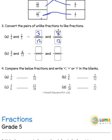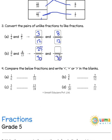Similarly for the next one, 30 would be the LCM. So 6 multiplied by 5 becomes 30. So 5 multiplied by 5 would be 25. And 15 multiplied by 2 is 30, so the numerator is also multiplied by 2 — in this case it was 8, so 8 twos are 16.